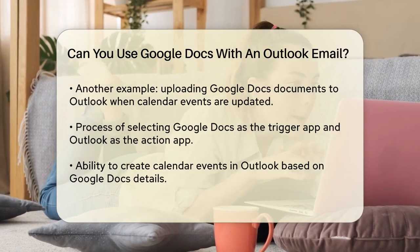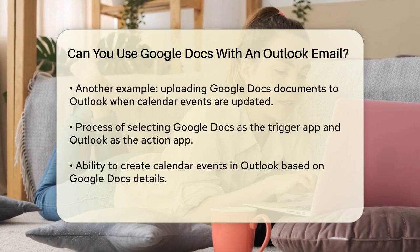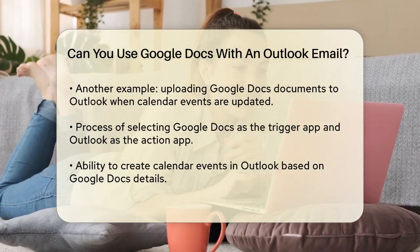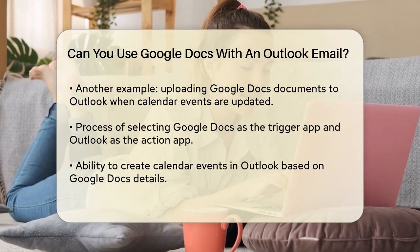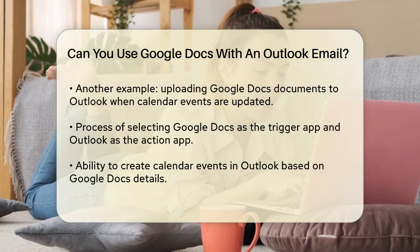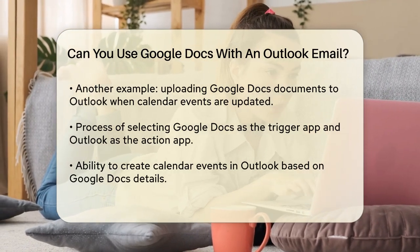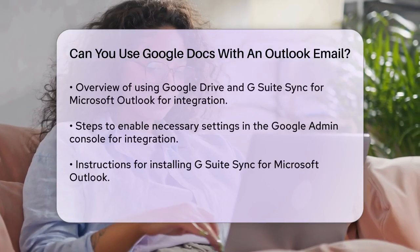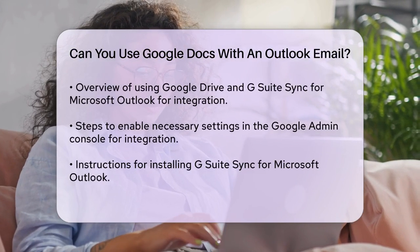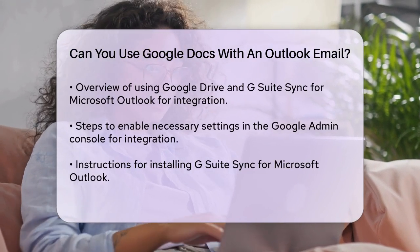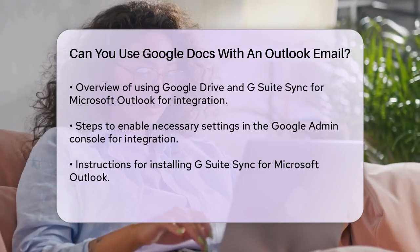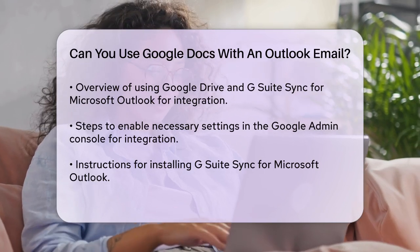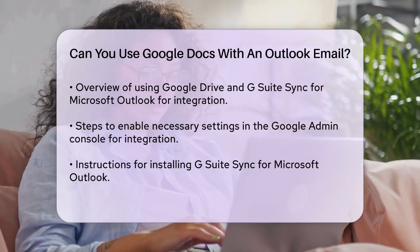Another way to integrate Google Docs with Outlook is by using Google Drive and the G Suite Sync for Microsoft Outlook. To do this, you need to ensure certain settings are enabled in the Google Admin console. You must turn on services like Calendar, Directory, Drive and Docs, and Gmail for everyone. Additionally, you need to enable G Suite Sync for Microsoft Outlook and API access in the security settings. Once these settings are in place, you can install the G Suite Sync for Microsoft Outlook.